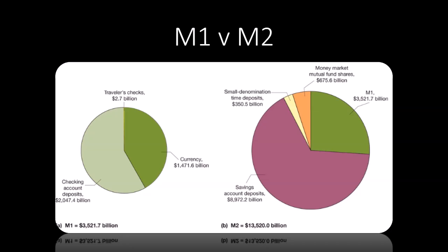If you flip over to the M2 side, the one thing you need to realize is that M1 is included. So that 3.5 trillion dollars is included in M2, and then it adds in savings accounts, small denomination time deposits, and money market mutual fund shares to finish it up.